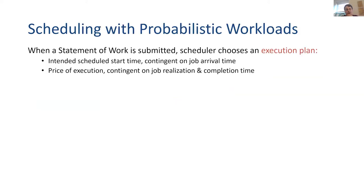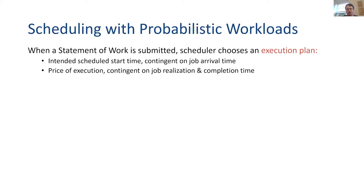When a statement of work is submitted, the scheduler is going to choose an execution plan — contingent decisions. It says: given your actual realized arrival time, here's when I'll start scheduling you; and given what the job actually uses, here's how much you'll pay. This latter part is particularly important. We're not going to try to extract expected payments upfront; rather, people are actually going to pay for what they use. Especially when jobs have very high variance, we don't want to overcharge people when they actually just use a little.